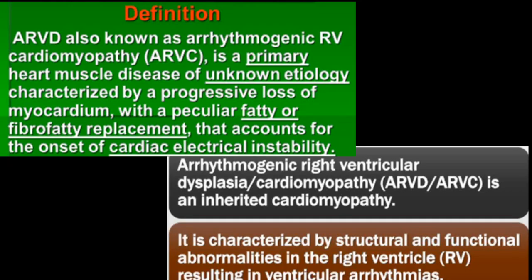By definition, ARVD is an arrhythmogenic right ventricular cardiomyopathy. It is basically a primary disease of unknown etiology characterized by progressive loss of myocardium, replaced by fatty tissue or fibro-fatty replacement. This accounts for cardiac electrical instability leading to cardiac arrhythmias like ventricular premature beats, ventricular tachycardia, and ventricular fibrillation, which can end in sudden cardiac death. Different names are given to this condition - arrhythmogenic right ventricular dysplasia or cardiomyopathy - which is also why it is called ARVC. It is one variety of inherited cardiomyopathy.